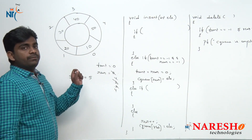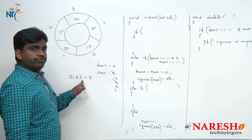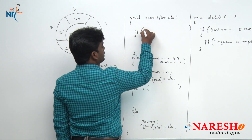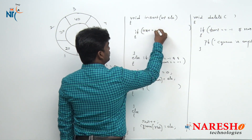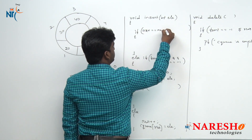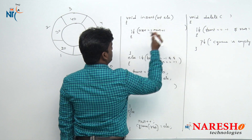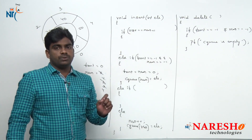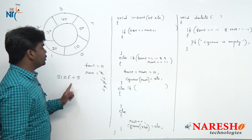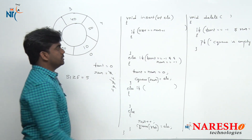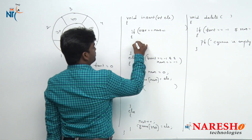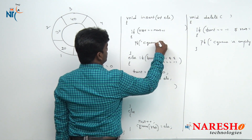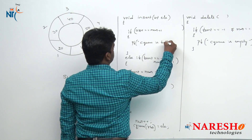Whenever size is 5 and rear is 4, it means size equals rear plus 1. If size equals rear plus 1, that means the queue is full. So we printf 'circular queue is full.'